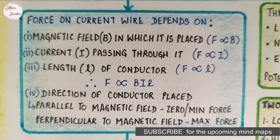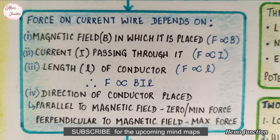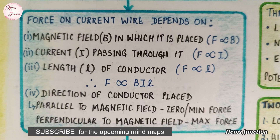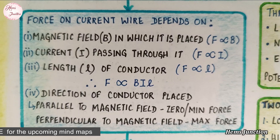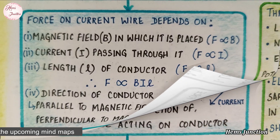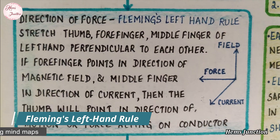If the direction of the conductor placed is parallel to the magnetic field, then the force is zero or minimum. If it is placed perpendicular to the magnetic field, then the force is maximum. The direction of the force is given by Fleming's left hand rule.